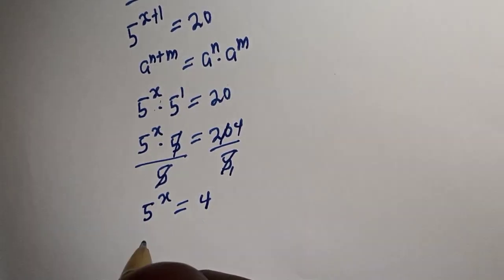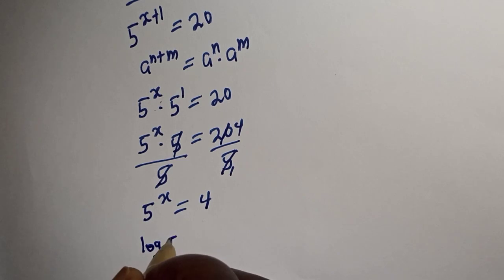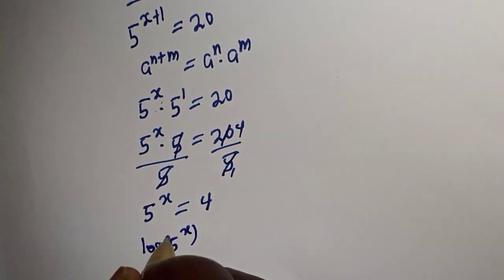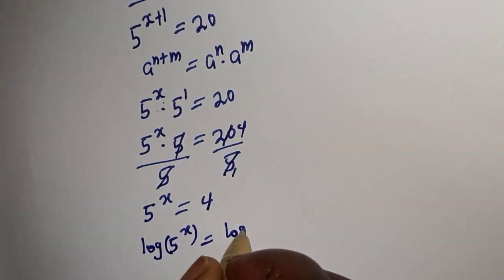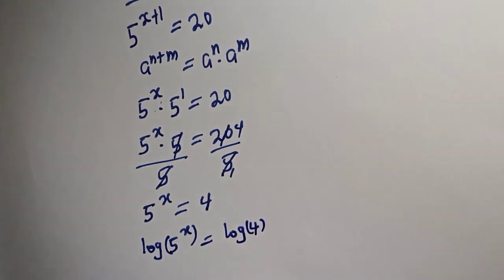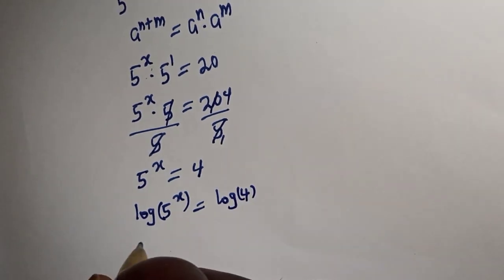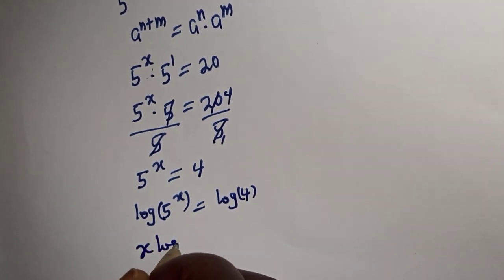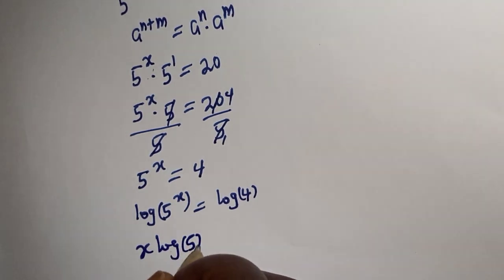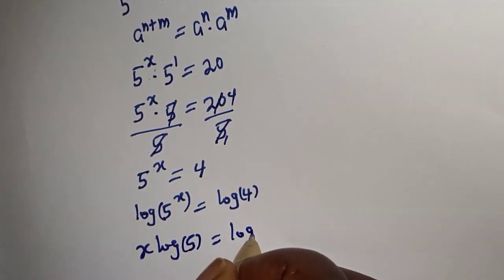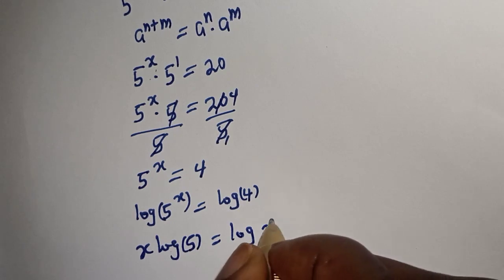Then let's take the log of both sides. Log 5 raised to power x is equal to log 4. Then this is x log 5 is equal to log 4, completing as 2 squared.